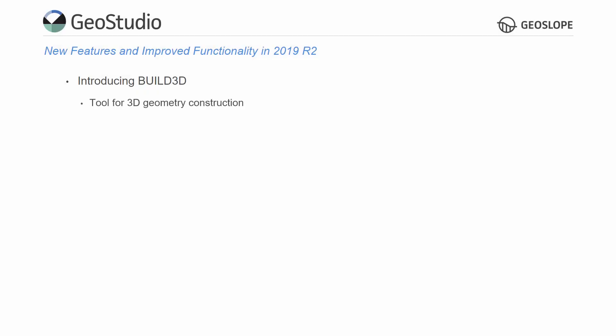Build3D is a revolutionary software tool for constructing three-dimensional, analysis-ready geometries. It is seamlessly integrated with the GeoStudio product suite, as it may be added onto any existing 3D analysis product license. Its powerful feature-based design allows for quick construction of 3D geotechnical models with complex topography or stratigraphic boundaries, and sweeping features such as tunnels or rivers.